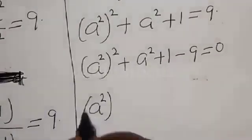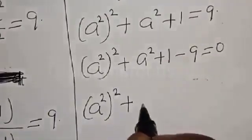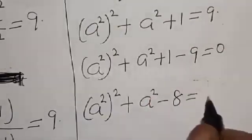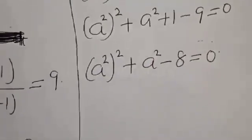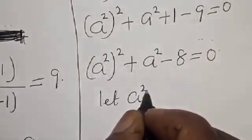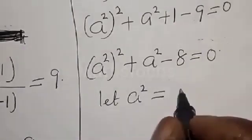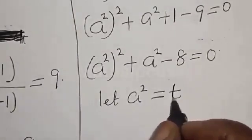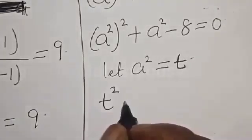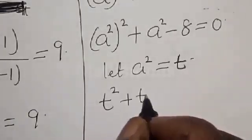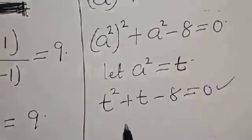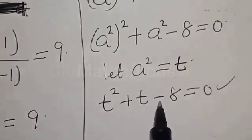We get a to the fourth plus a squared plus 1 minus 9 equals 0, which simplifies to a to the fourth plus a squared minus 8 equals 0. Now let a squared equal t, then we have t squared plus t minus 8 equals 0. This is a quadratic equation.